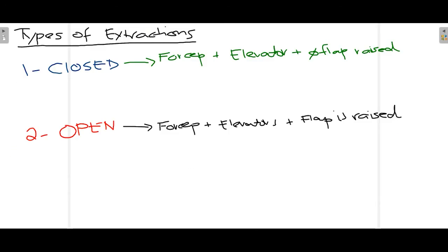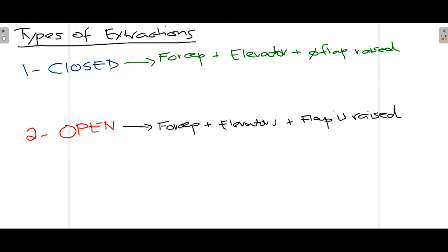There are two types of extractions mainly. The first is closed extraction and second is open. In closed extraction, forceps and elevators are used and there is no surgical incision applied over the area where the tooth is being extracted — no flap is raised. So only forceps and elevator are used. This is known as closed extraction.